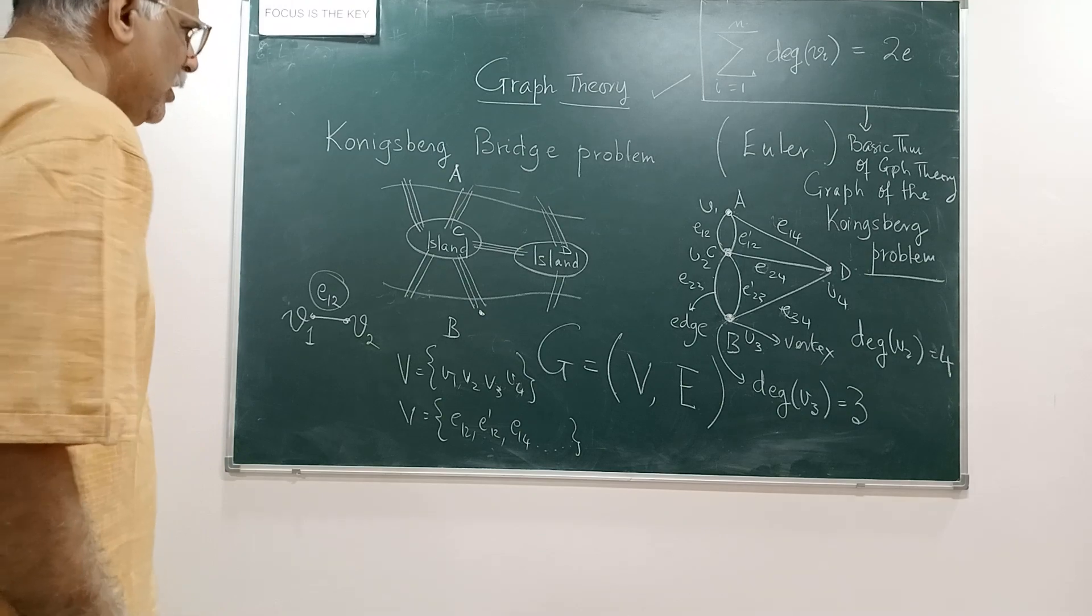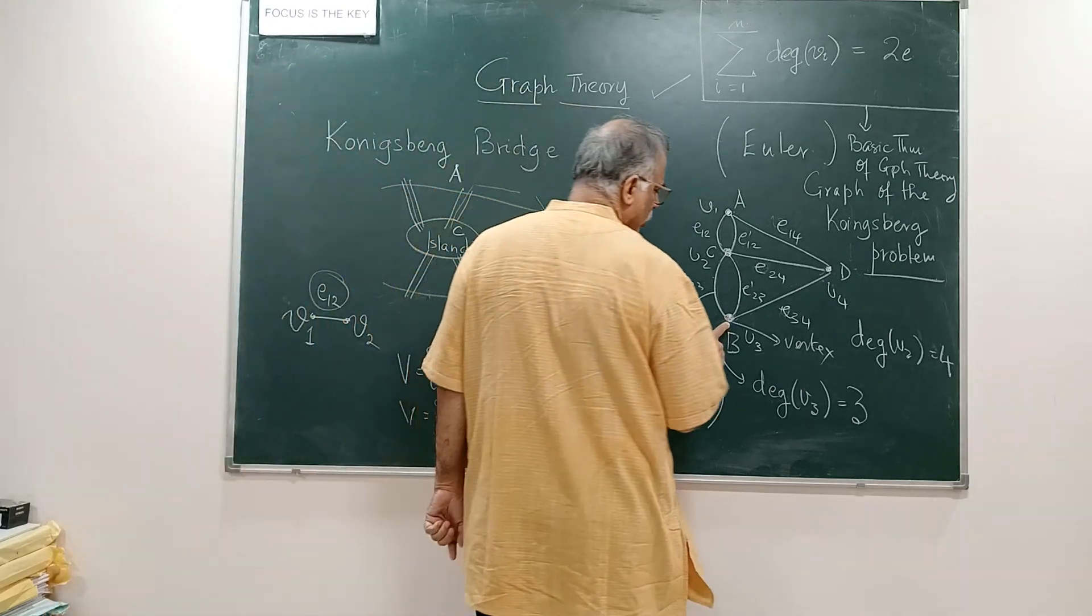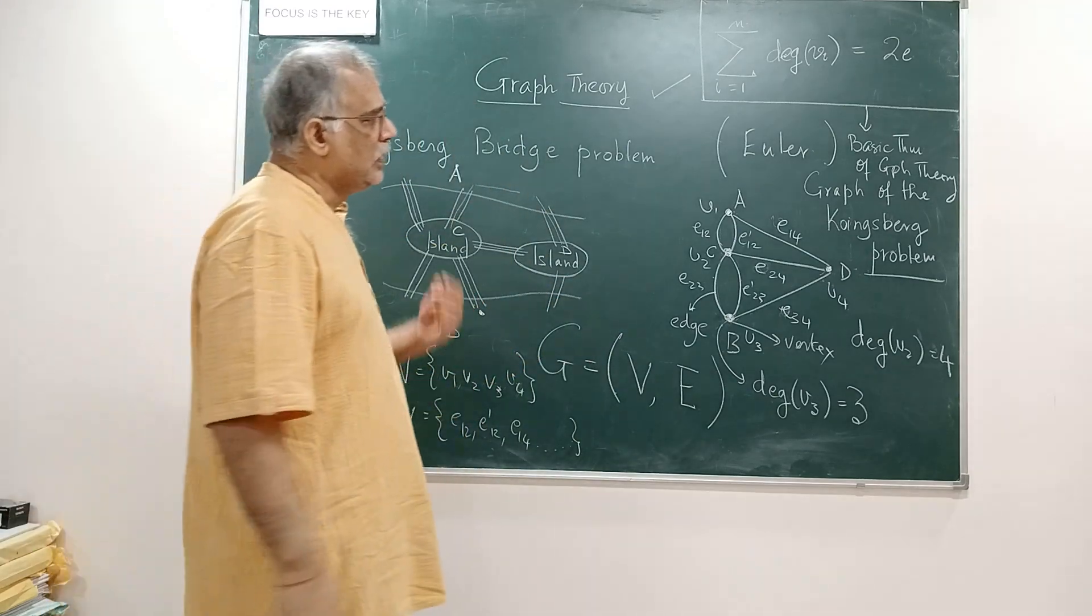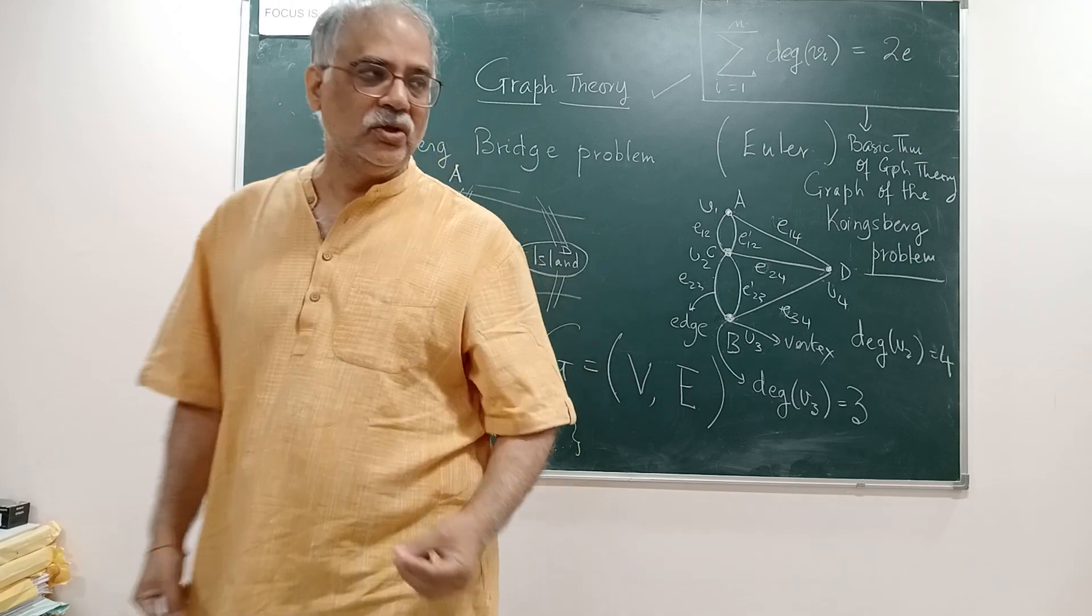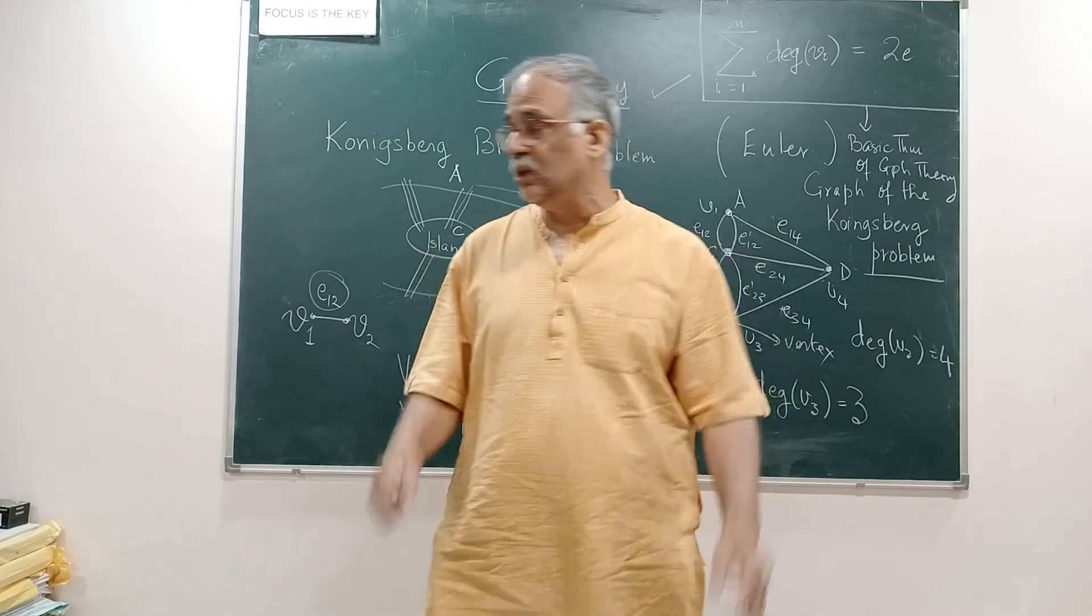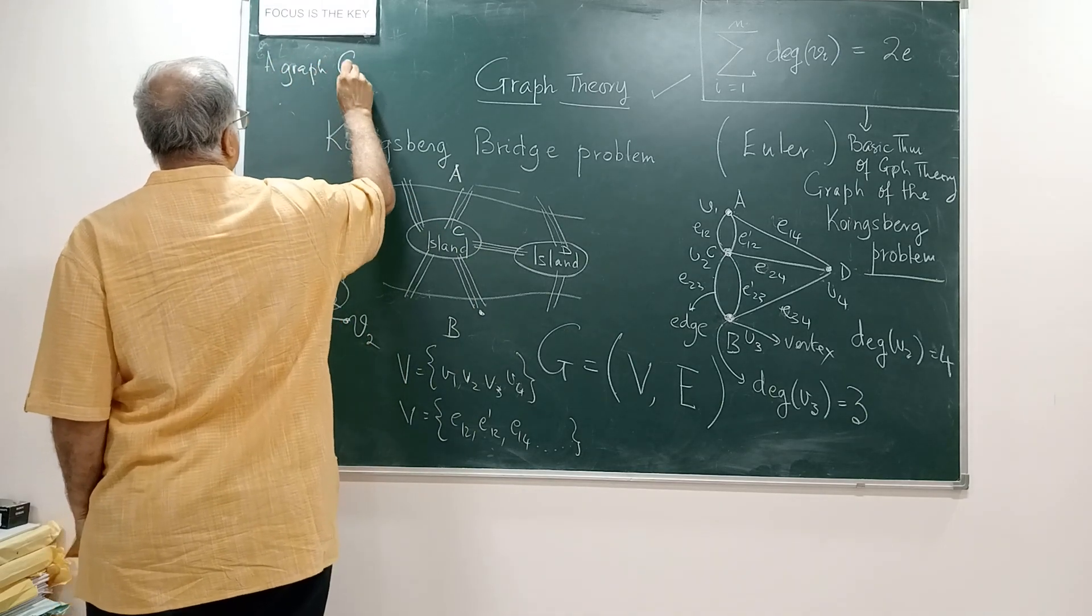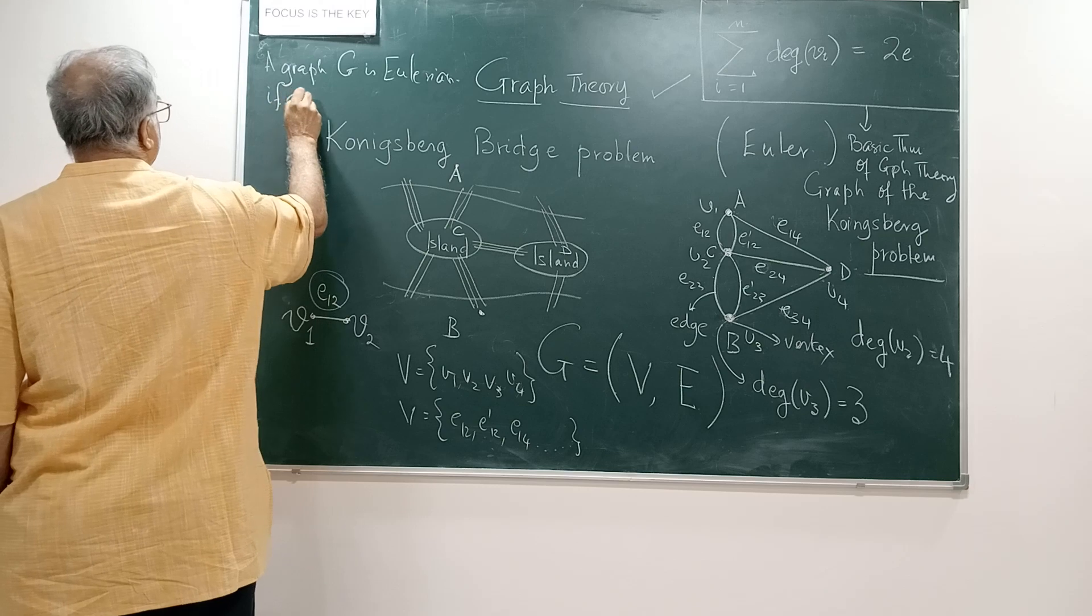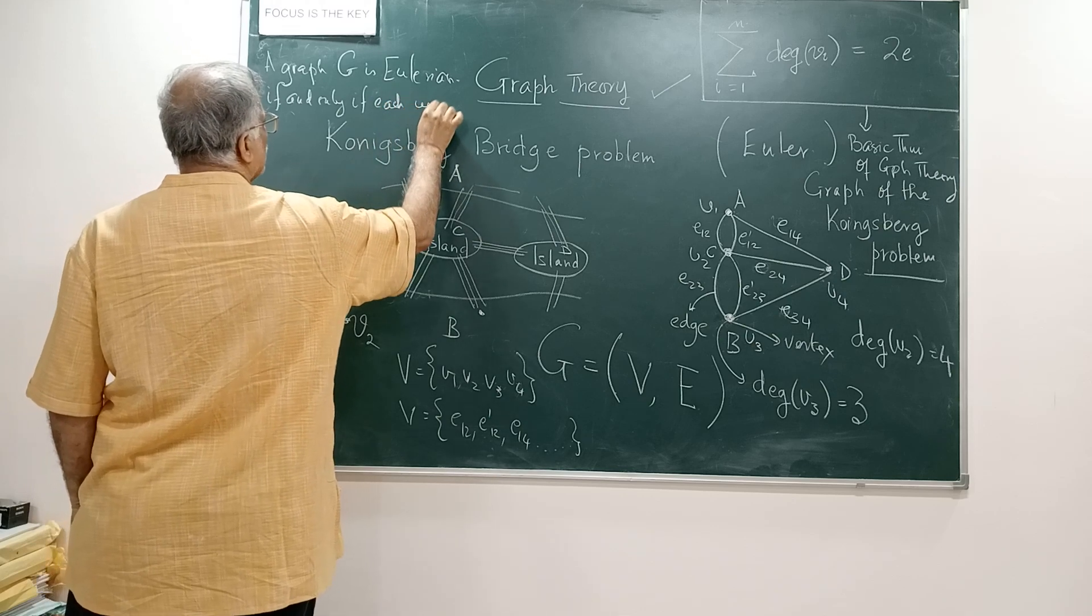What Euler could show was that such a walk, which was later named as Eulerian walk, where you start from one vertex on the graph and come back to the same vertex by walking every edge only once, is possible if and only if all the vertices are of even degree. A graph G is Eulerian if and only if each vertex is of even degree, and that is one of the most fundamental results of graph theory.